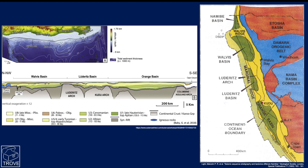Like the other offshore basins on the Namibian Passive Margin, the Lüderitz Basin formed during the opening of the Atlantic Ocean in the late Jurassic to early Cretaceous. The sediments are mainly thick, shallow marine to deltaic sandstones deposited in the upper and lower Cretaceous, overlying continental clastics and volcanics. The Lüderitz Basin displays a thin late Cretaceous section, but the Tertiary developed rapidly, accumulating a thick clastic section, laterally offset from the present-day mouth of the Orange River.